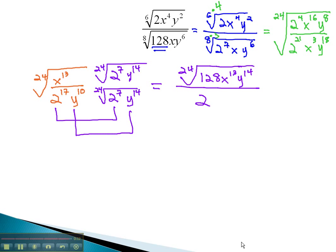and y to the 24th, under a 24th root, is just y. This becomes our rationalized solution.